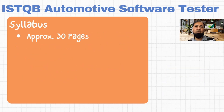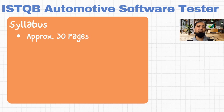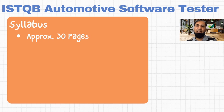The whole syllabus consists of around 61 pages. Out of these 61 pages, there are approximately 30 pages which are relevant for your exam. So if you learn this content of 30 pages well, it's very likely that you will pass the exam with very good grades.